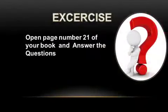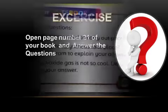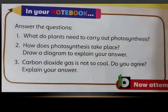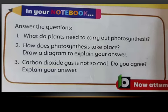For exercise, open page number 21 of your book and answer the questions in your notebook. Question number 1: What do plants need to carry out photosynthesis? Question number 2: Where does photosynthesis take place? Draw a diagram to explain your answer.